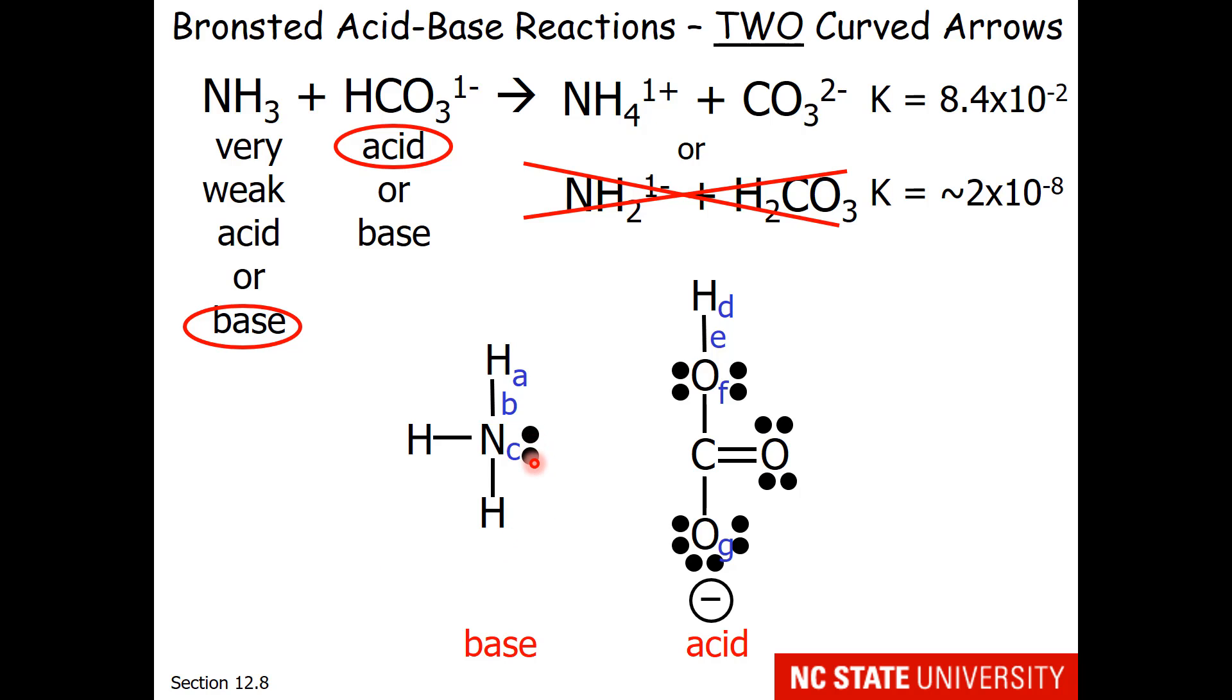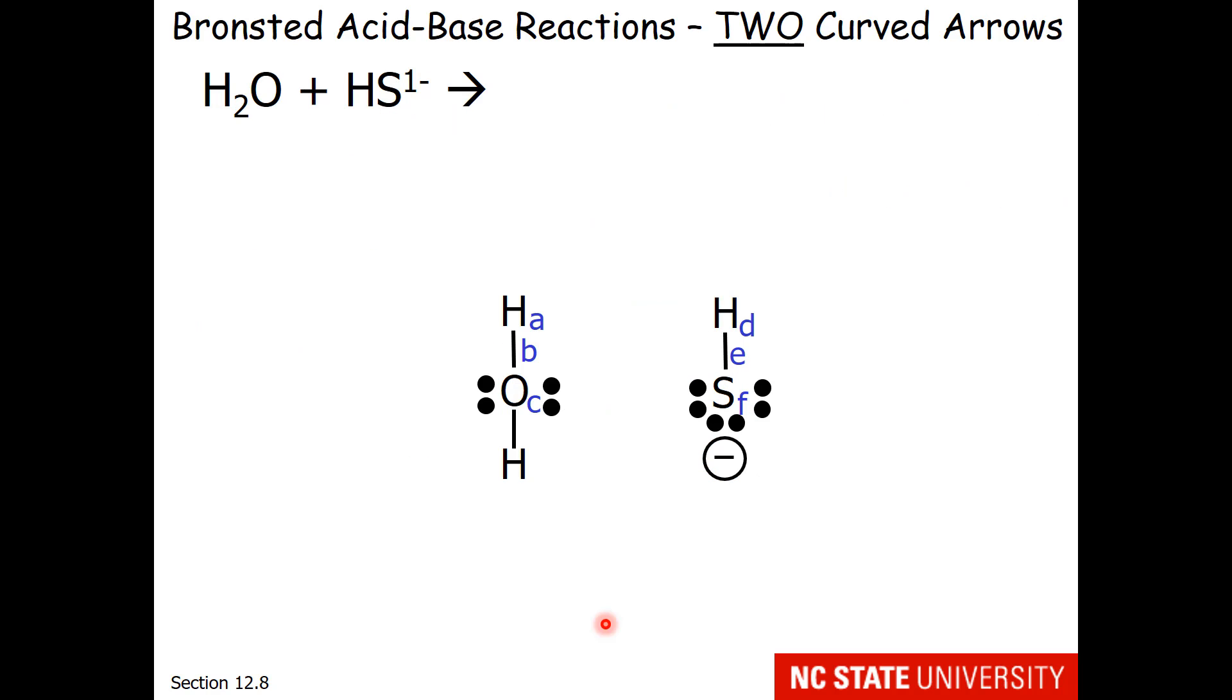Now hopefully it's clear what we need to do. This is the base. So it's going to reach out and grab the hydrogen. And the acid is going to let go. So we reach out and let go. WebAssign will ask you to enter letters to describe this. So what we're going to describe is an arrow starting at C and ending at D, and another arrow starting at E and ending at F. Notice our arrows start at electrons. The first one ends at hydrogen. The second one ends at the atom that was attached to hydrogen.